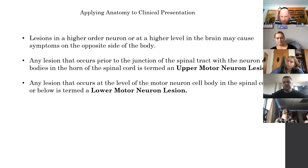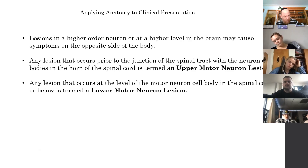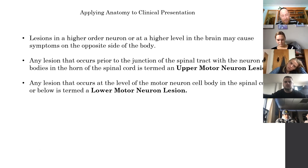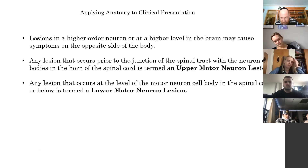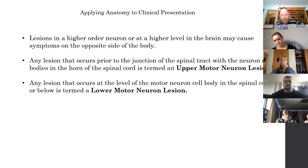As opposed to someone that comes in with an L5-S1 radiculopathy with nerve compression at that level - a disc herniation touching the peripheral nerves. They have numbness and tingling in the L5-S1 distribution, weakness of the great toe, and weakness with ankle eversion. That is a lower motor neuron lesion because it occurs below the level of the spinal cord in the periphery.